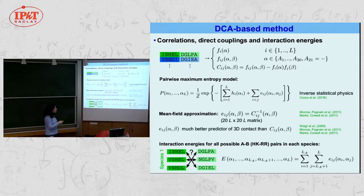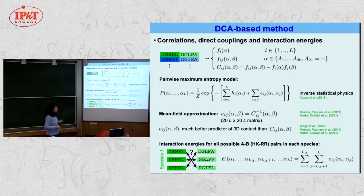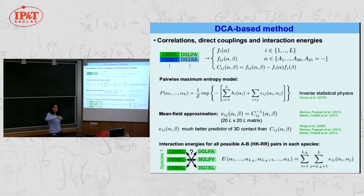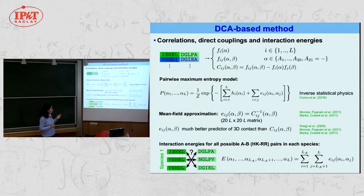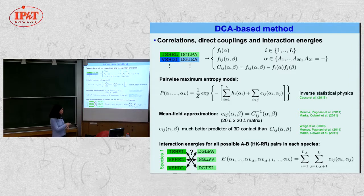We build a pairwise maximum entropy model starting from the one- and two-body frequencies: the least-structured L-body probability distribution that matches the observed one- and two-body frequencies from the data. When you maximize entropy — writing the minus sum of p log p — under the constraints of matching these frequencies, you obtain a form familiar to physicists: it looks like the Boltzmann distribution of a Potts model, with one-body terms (fields) and two-body terms (couplings). This is the classical result of inverse statistical physics, used also in neuroscience and many other fields.